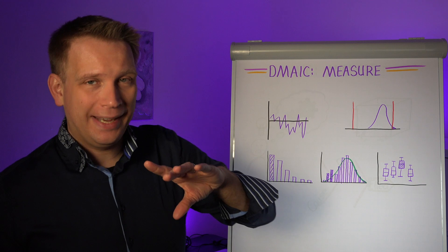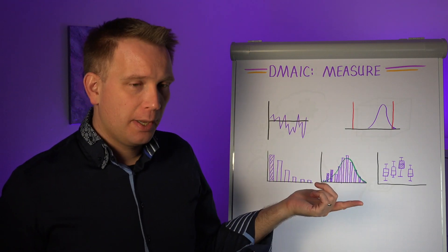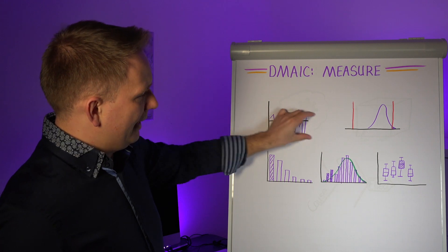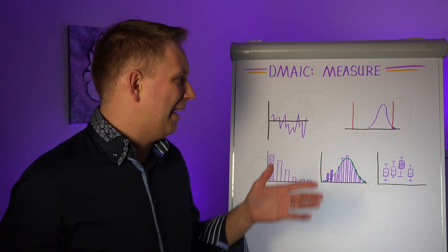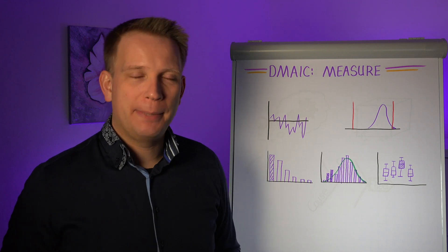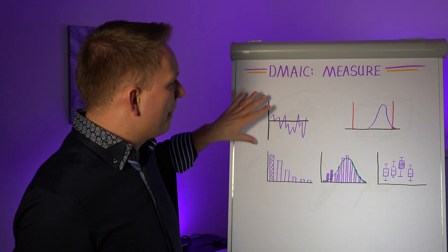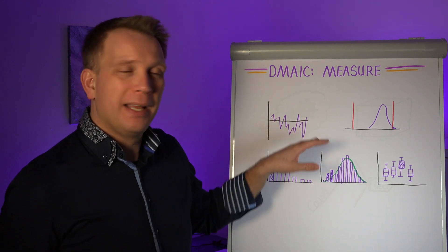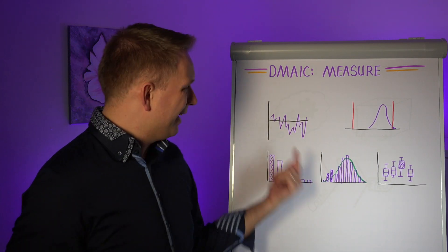Now we will get to an SPC chart, but that's in the control phase. See that this run chart, it doesn't have any control limits. And we didn't put specification limits in here either. But this just shows, you know, what is the process doing? What is our output doing in time?